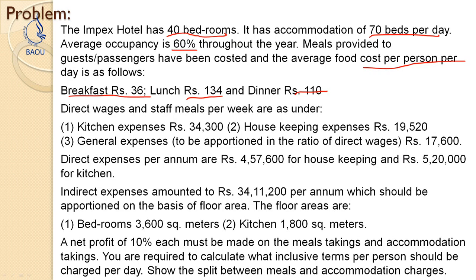General expenses are to be apportioned in the ratio of direct wages, which is 17,600. Direct expenses per annum: 457,600 rupees for housekeeping and 520,000 rupees for kitchen. Indirect expenses amount to 3,411,200 rupees per annum, which should be apportioned on the basis of floor area. Indirect expenses are given as a total and will be distributed between the two services on the basis of floor area: bedrooms — 3,600 square meters, and kitchen — 1,800 square meters.